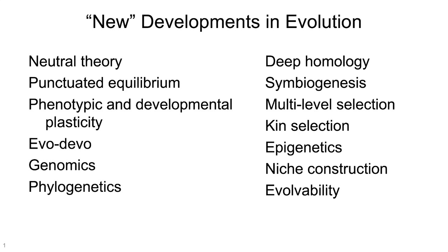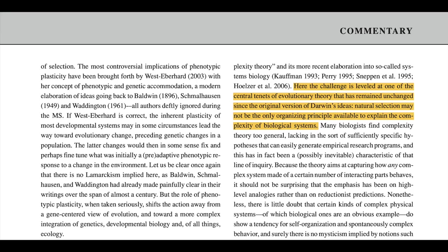Late in that same piece, Pigliucci introduces a concept called complexity theory — the details of which are beyond the scope of this video — but he starts with this sentence: 'Here, the challenge is leveled at one of the central tenets of evolutionary theory that has remained unchanged since the original version of Darwin's ideas. Natural selection may not be the only organizing principle available to explain the complexity of biological systems.' Yeah, natural selection isn't the only principle available to explain the complexity of biological systems. We've known that for decades — we've known that for a century. So this is why I'm frustrated with EES proponents. It seems to be a lot of talk, much of it coming from philosophers and other people outside of the field of evolutionary biology, about how evolutionary theory doesn't include stuff it already includes. Which is why the answer to Jackson's question is no.